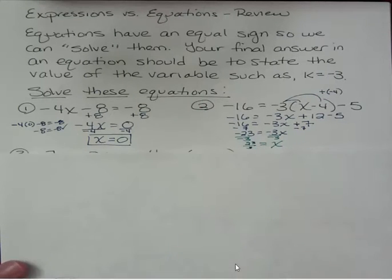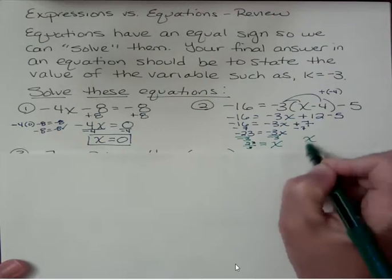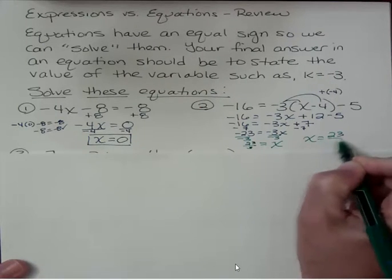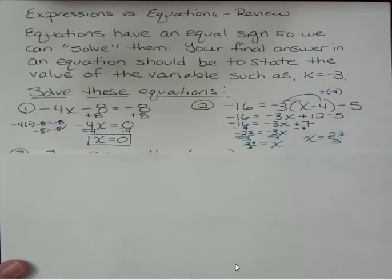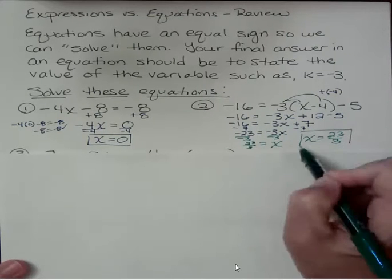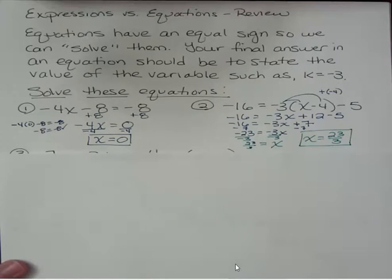Sorry, I should have given that a little more space. x equals 23 thirds. I could write it this way on the x on the left or the right. But don't change it to a decimal. Don't change it to a mixed number unless you're specifically asked to leave it as an improper fraction. Improper fraction is perfectly acceptable.